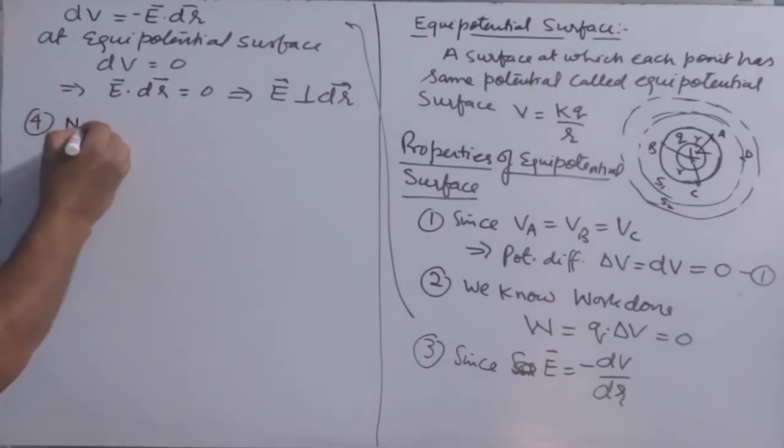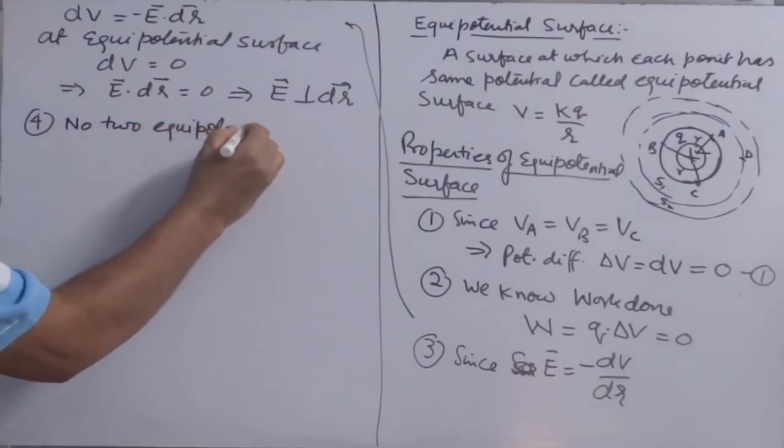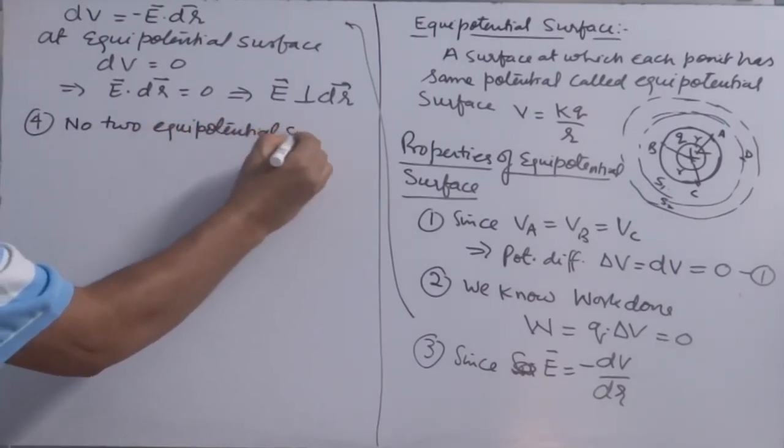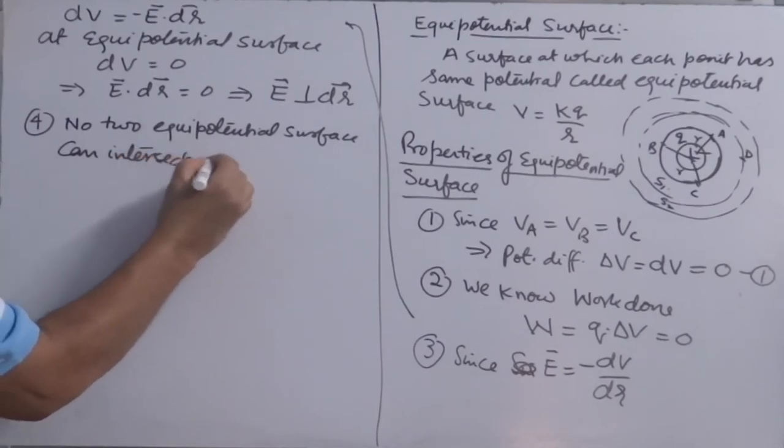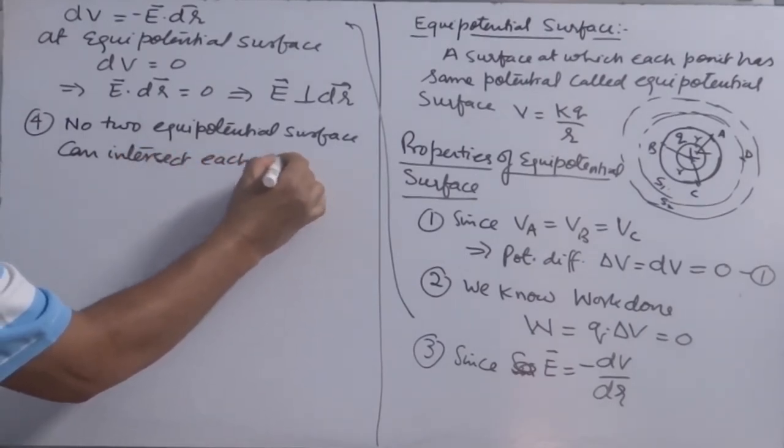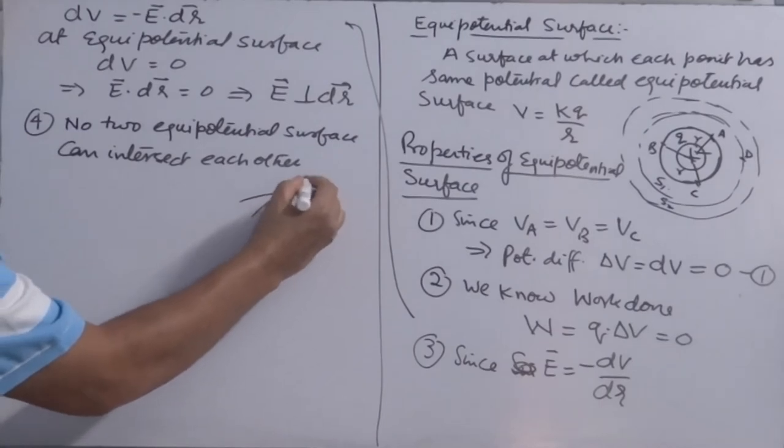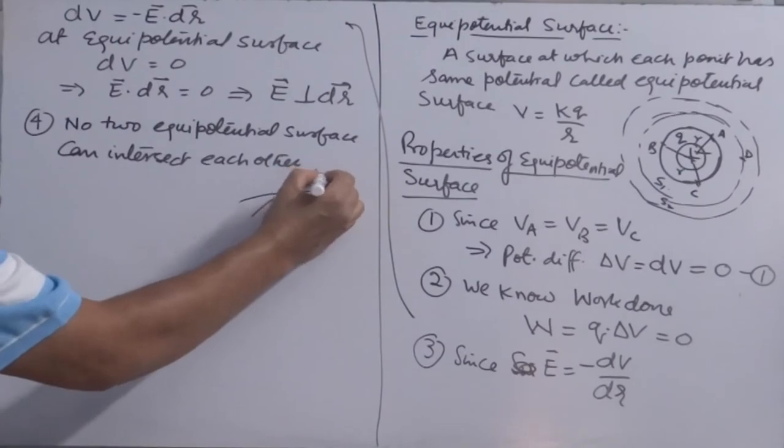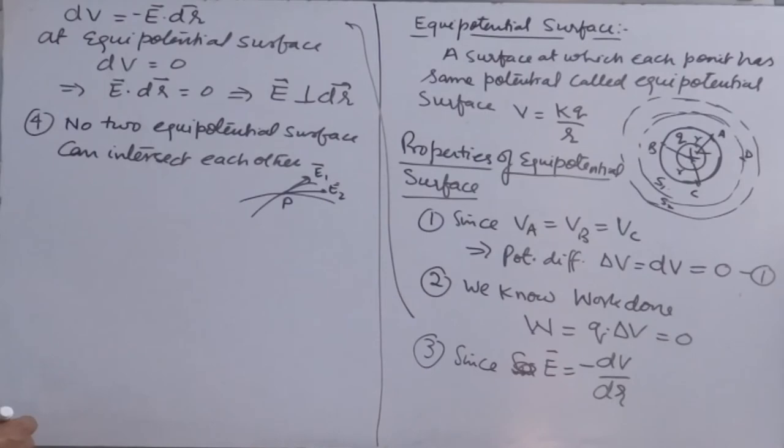Fourth is same. No two equipotential surfaces can intersect each other. The reason is same as that of. Because if two equipotential surfaces intersect, you will have to control two tangent at the point of intersection. That is two directions of electric field. Which is not possible.